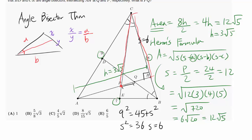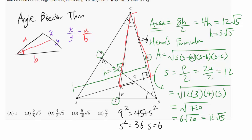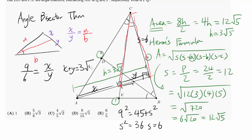Now we apply the angle bisector theorem to triangle ACH. We have AC over CH equals AP over PH, so 9 over 6 equals x over y, where AP equals x and PH equals y. We also know x plus y equals 3√5. From 9/6 = 3/2, we get x equals (3/2)y. Substituting: (3/2)y plus y equals (5/2)y equals 3√5, so y equals (6/5)√5.